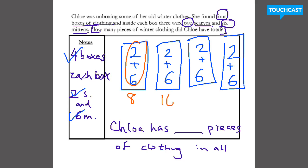So I'm going to look at one of my boxes and do it in a different color. Two plus six right here would be eight — so each box must hold eight. Eight, 16, 24, and 32. So right now I just counted by eight to see how many pieces of clothing in all. So she has 32 pieces of clothing in all.